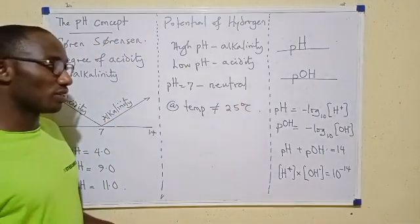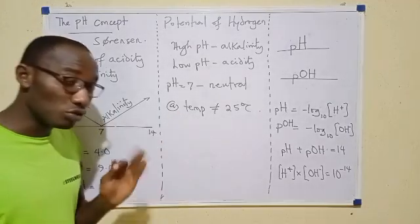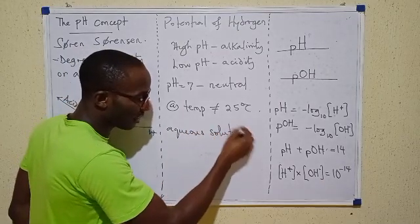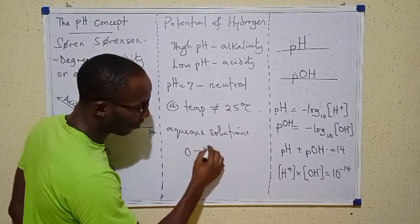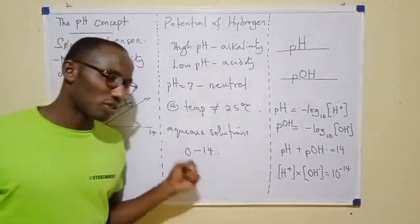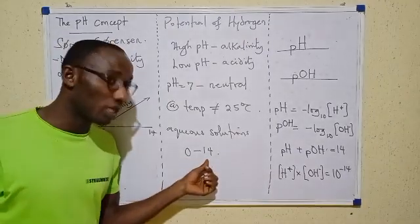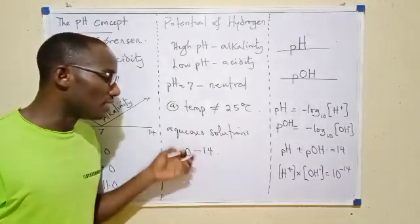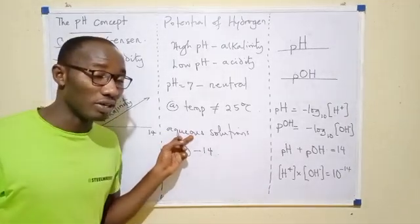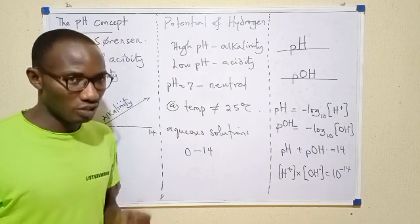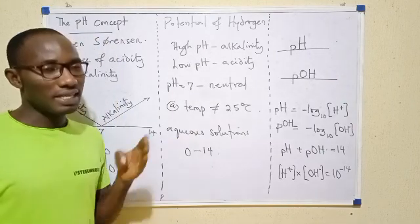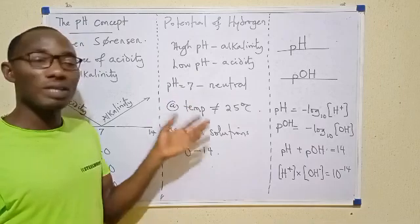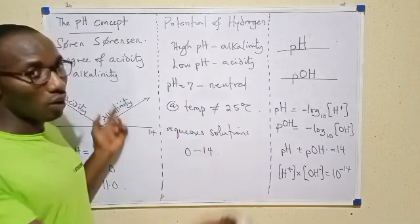At 25 degrees Celsius, usually, aqueous solutions of substances have pH values ranging between 0 and 14. So what conditions did I give for pH to range between 0 and 14? Usually, that pH will need to be measured at room temperature, and the substance in question should usually be in the form of an aqueous solution. So when you have an aqueous solution of a substance at 25 degrees Celsius, it's very likely that its pH will range between 0 and 14. But at other temperatures and for other kinds of solutions, pH can actually go out of this range.